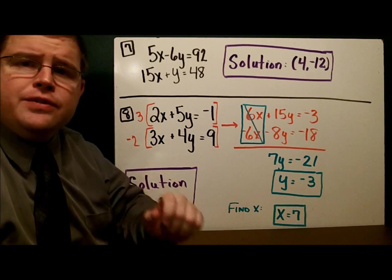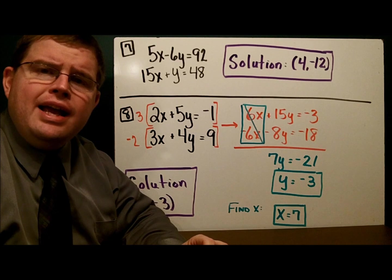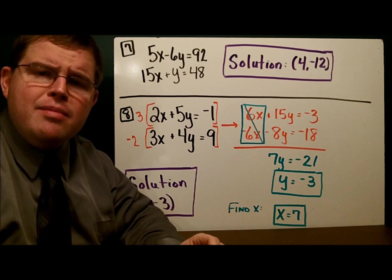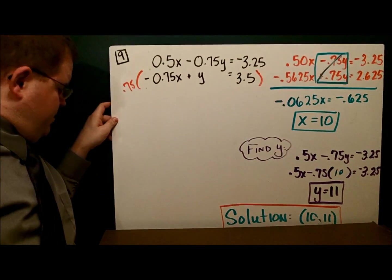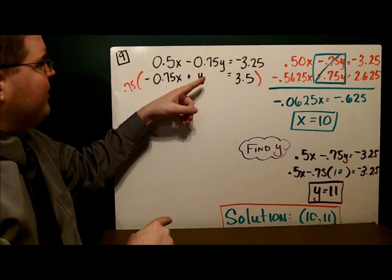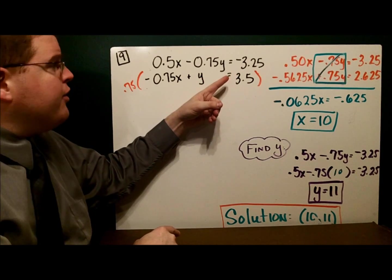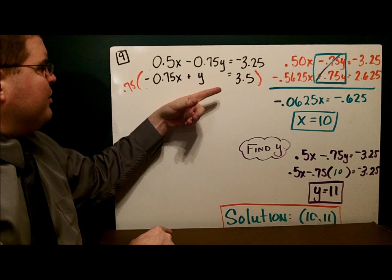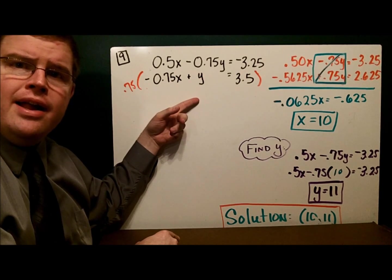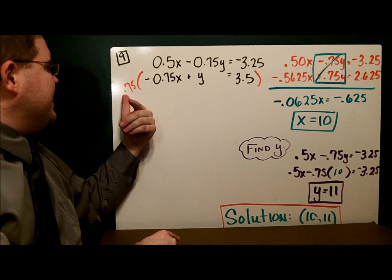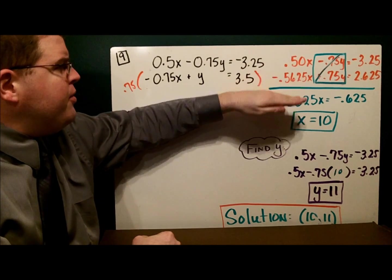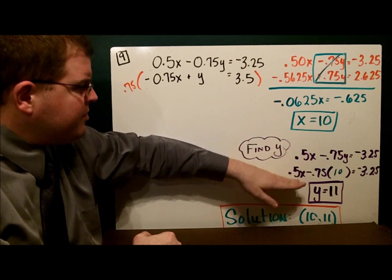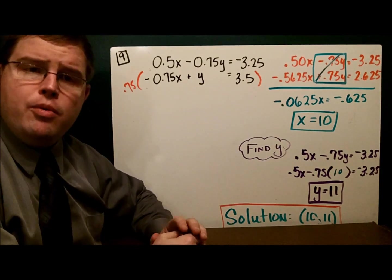The final example is for you to try. In this example, there are actually some decimals. Let's take a look. In the final example, we had 0.5x minus 0.75y equals negative 3.25. Down here, I had nothing that was the opposite, but I did have a 1y. And since I had a 1y, I could multiply that bottom by 0.75. And now, I have opposite variables. I go through, use the addition method. X equals 10, Y equals 11. So, the solution is the point (10, 11).